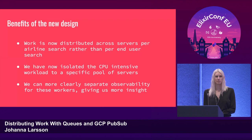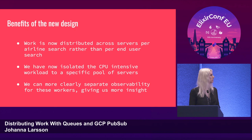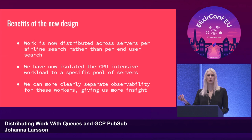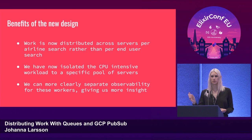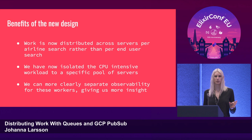The benefits of the new design: work is now distributed across servers per airline search rather than per end user search, which is a huge improvement. We've also isolated the CPU-intensive workload — the actual processing of results — to a specific pool of servers, which means we can do all kinds of optimizations: use servers better suited for that kind of work, high-CPU servers or whatever your cloud provider supports. And we can now more clearly separate the observability for those servers, making it easier to understand what they're doing because the work is no longer mixed with other kinds of work.